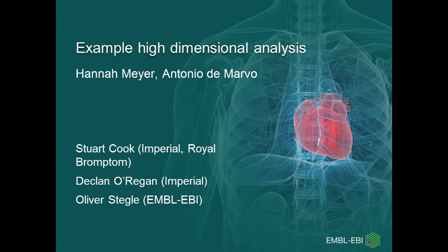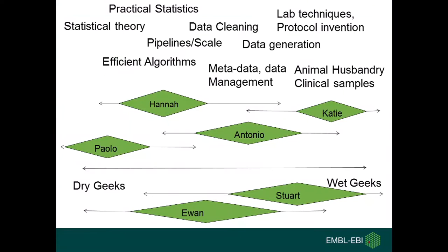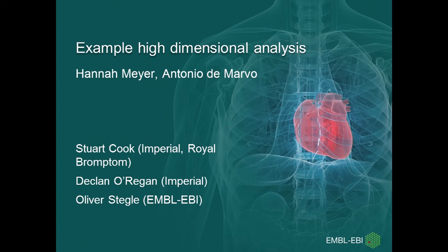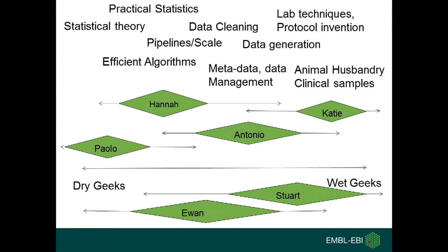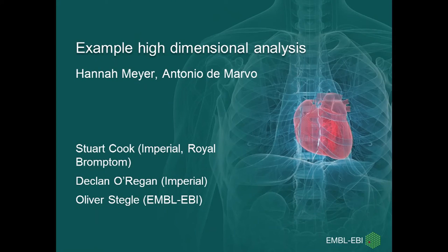So let me give you this as an example piece of high-dimensional analysis. The two absolutely key people are Hannah and Antonio, Paolo and Katie. Katie was helping on the clinical end, Paolo helping at the statistical end. It's a collaboration with Stuart Cook, who's a cardiologist at the Royal Brompton, Declan O'Regan, and Oliver Stegall, who is the statistician. This is a classic genotype-to-phenotype paradigm.